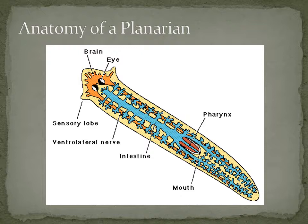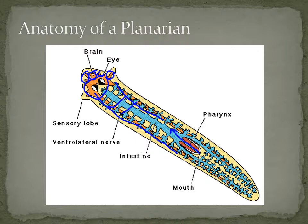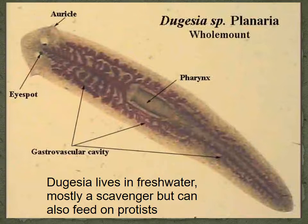This diagram does a great job of showing what a planarian looks like. Up here we have the eye spot, and this area is called the brain — these are all little ganglia. You can see it extends down into nerve cords on both sides. The mouth with the pharynx attached leads into what this labels as intestines, but it's really the gastrovascular cavity.